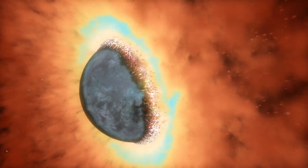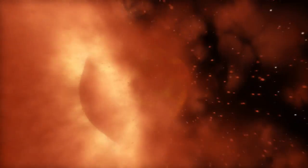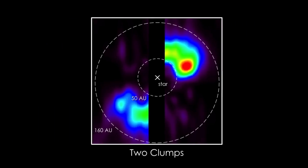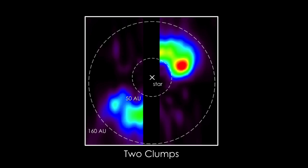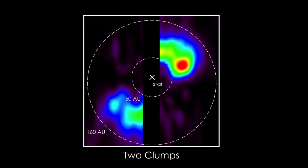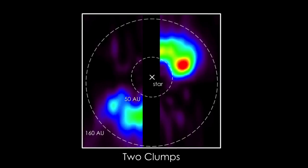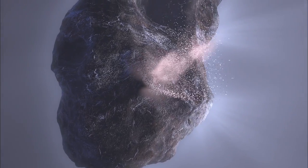The second, and we think more likely, scenario is that the carbon monoxide exists in two clumps and is continually replenished by collisions in huge comet swarms.